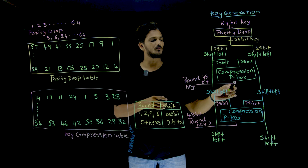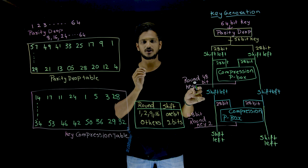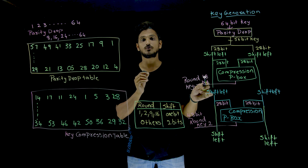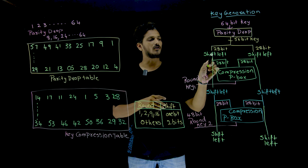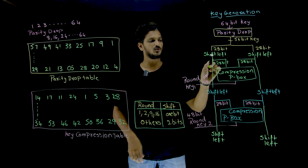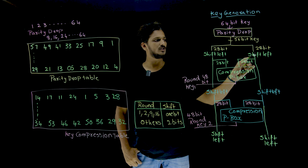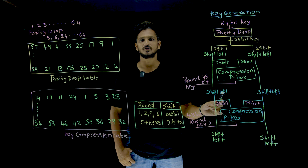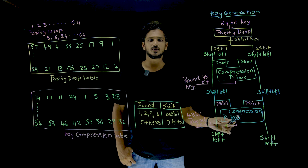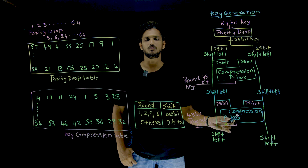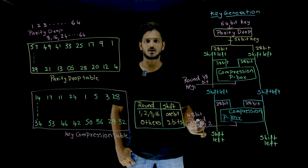The output which we get from this compression p-box we call round key 1 — the first key has been generated, which is a 48-bit key. After doing this left shift, the 28 bits move to the next round, and these 28 bits also move to the next round. Again shift left, again shift left on both 28-bit halves, and they are moved inside the compression p-box again, generating a 48-bit round key.